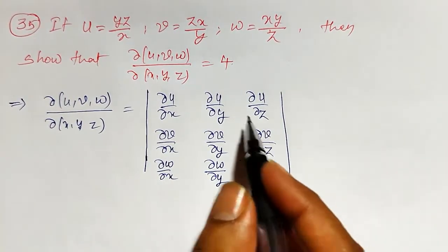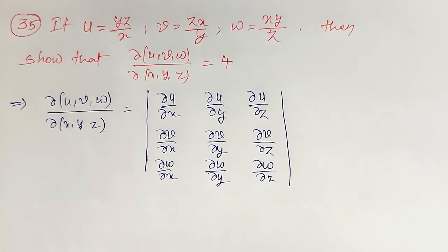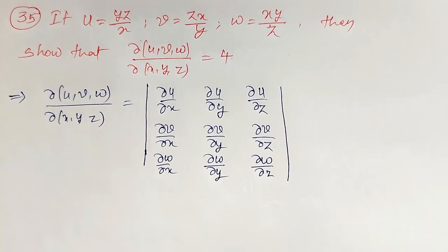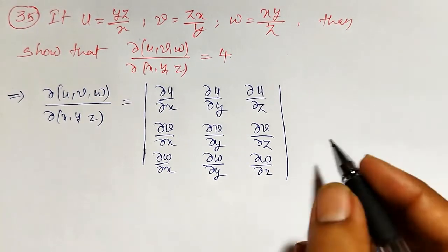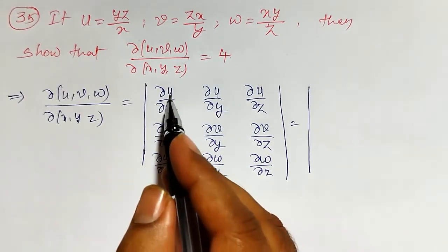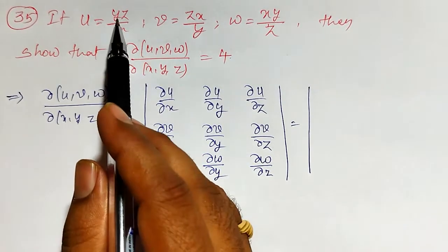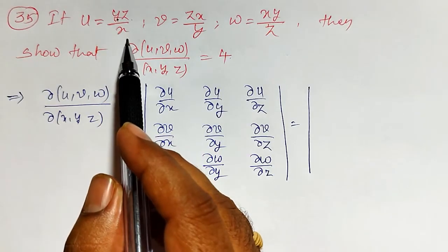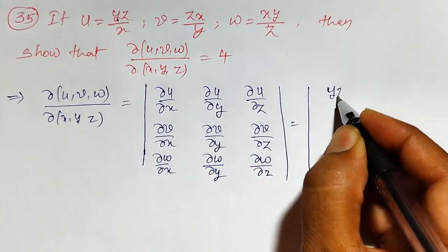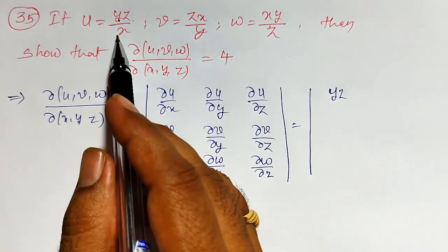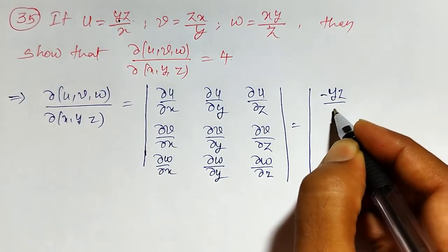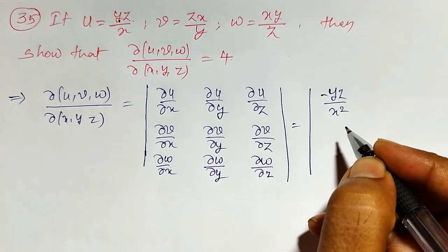If you solve these partial derivatives and simplify the determinant, we must get the result equal to 4. Let me now compute all the partial derivatives. Starting with ∂u/∂x: taking the partial derivative of yz/x with respect to x, where y and z are constants. The partial derivative of 1/x is −1/x², so ∂u/∂x = −yz/x².